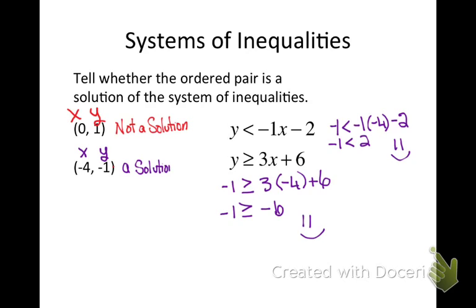And in fact, if I graph these two inequalities, the point (-4, -1) would fall in the area where the two shaded regions overlap.